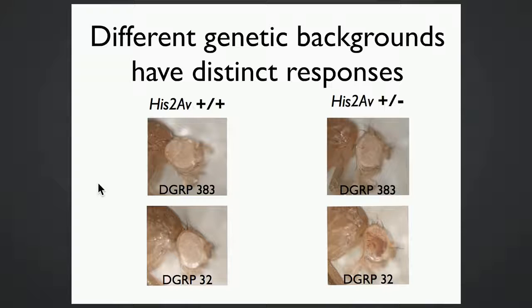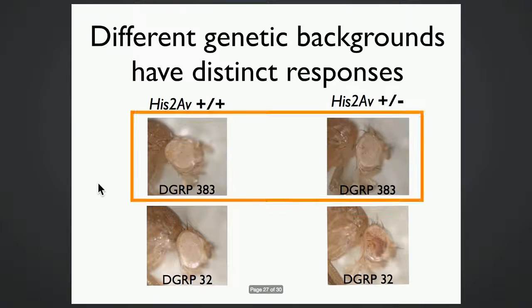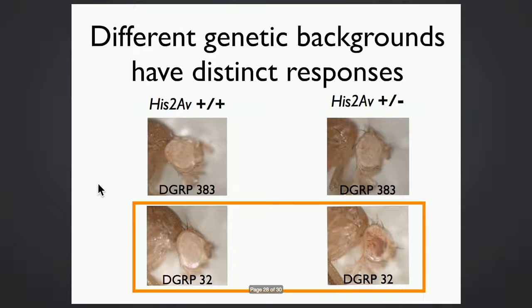For example, DGRP line 383 doesn't seem to care very much when we remove a copy of His2AV. However, DGRP line 32 seems to care quite a bit, illustrating the range of background-dependent responses we're observing.